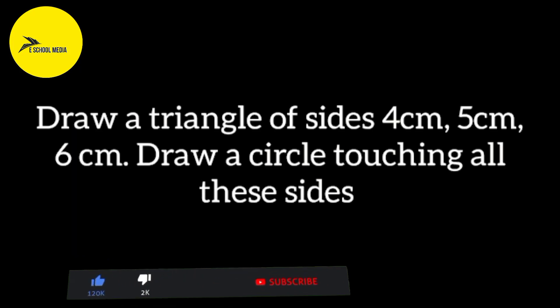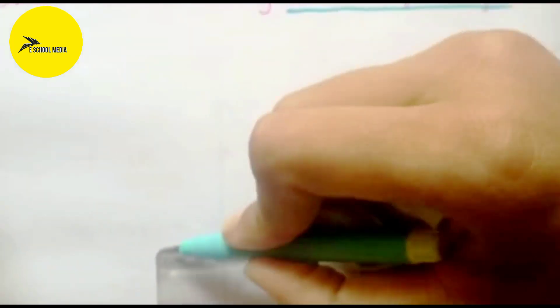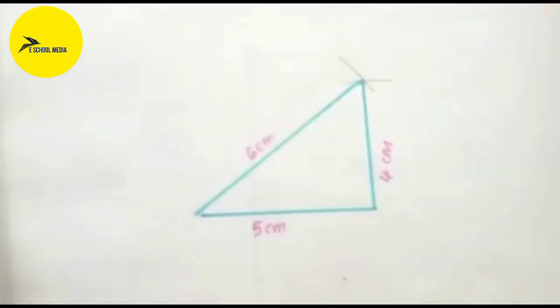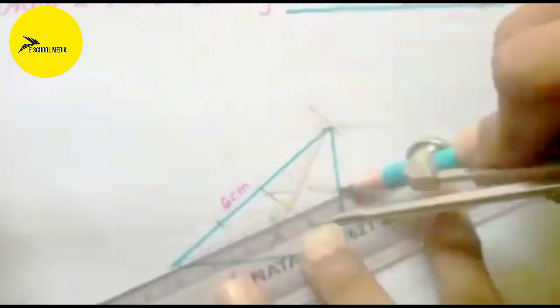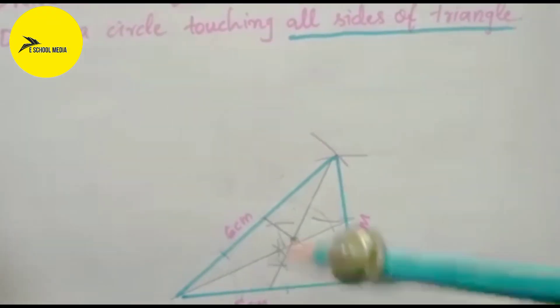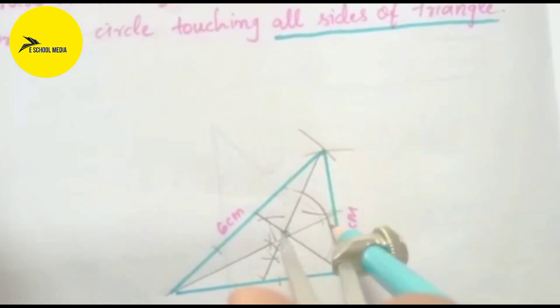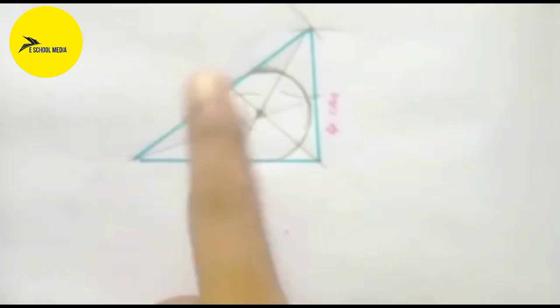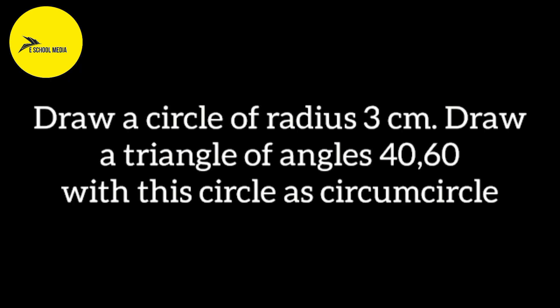Draw a triangle of sides 4 cm, 5 cm, and 6 cm. Draw a circle touching all these sides of the triangle. The three angle bisectors meet at a point in the center of the circle. The same triangle — a circle touching each side. We adjust the top of the circle.